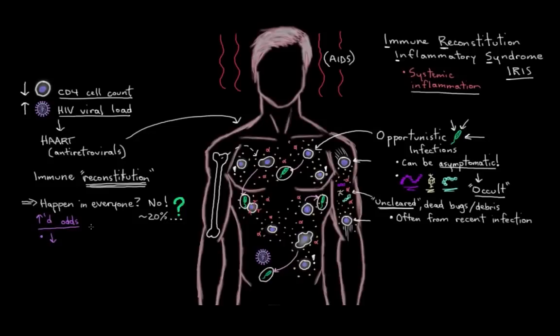But it's thought that a couple things can increase the odds of IRIS after starting antiretroviral treatment. So having a really low amount of immune cells before starting HAART and having any active opportunistic infections or high burden of bugs in your system when you do start HAART. And again, these qualities have just been associated with the development of IRIS. And we're free to hypothesize why, but we can't exactly put our finger on why this is the way it is as of yet.